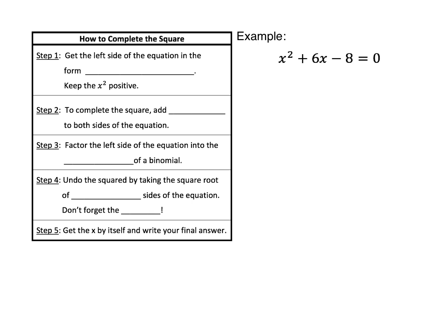The first step of the process is to get the left side of the equation in the form x squared plus bx, and you want to keep the x squared term positive. So we want to just get rid of that minus 8 and move it to the other side. I'm going to add 8 on each side, and that gets us down to x squared plus 6x equals 8.